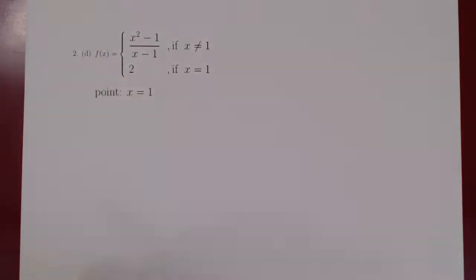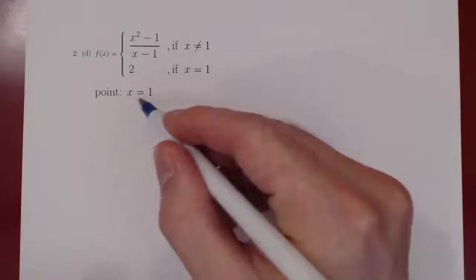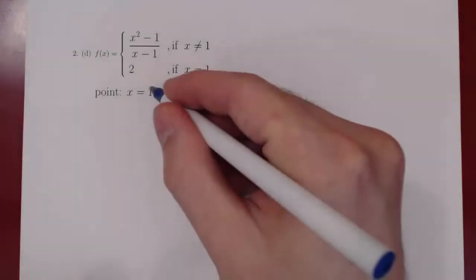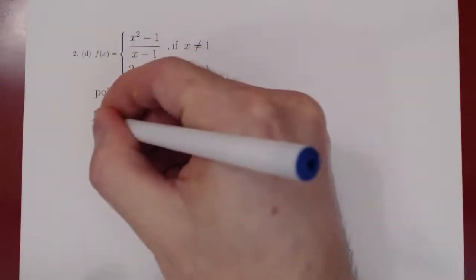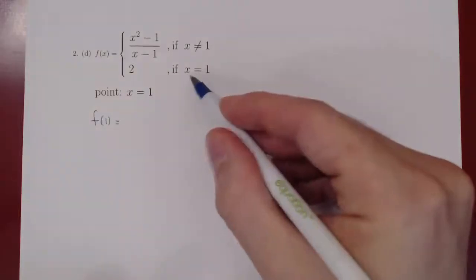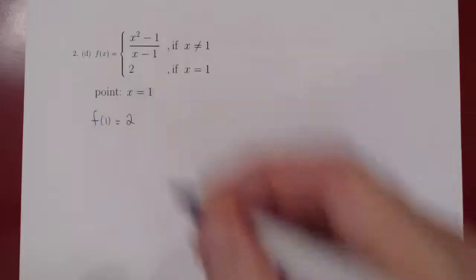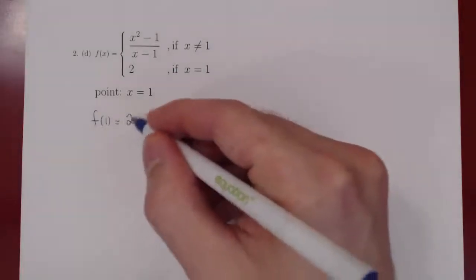This is problem 2D on the problem sheet on continuity. The question is: is the function f(x) continuous at the point x equals 1? As always, the first step is to see whether or not f is defined at the given value of x. So what is f(1) equal to? Well, when x is 1, f(x) is simply equal to 2. So far so good — f is defined at 1 and the value is 2.